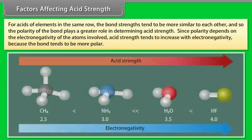For acids of elements in the same row, bond strengths tend to be more similar, so the polarity of the bond plays a greater role in determining acid strength. Since polarity depends on the electronegativity of the atoms involved, acid strength tends to increase with electronegativity because the bond tends to be more polar.